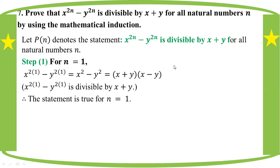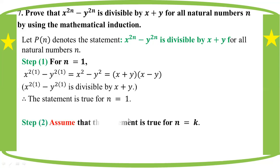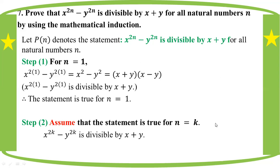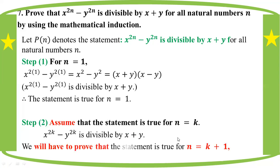Step two: assume the statement is true for n equal to k. We have shown that the statement is true for n equal to k. That is: x to the power 2k minus 1 to the power 2k is divisible by x plus 1. We will have to prove that the statement is true for n equal to k plus one.